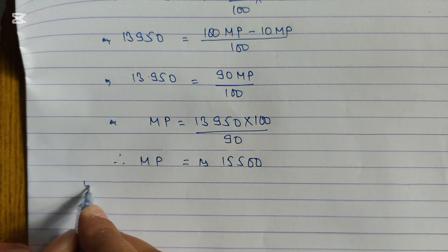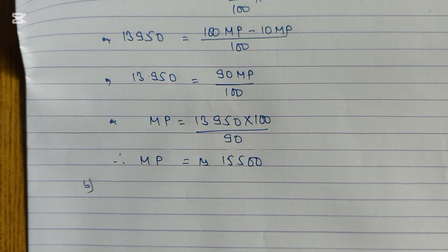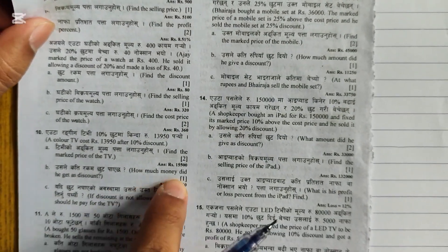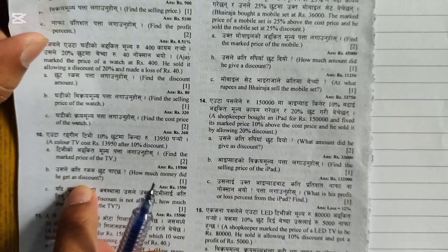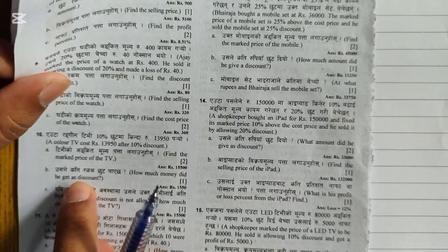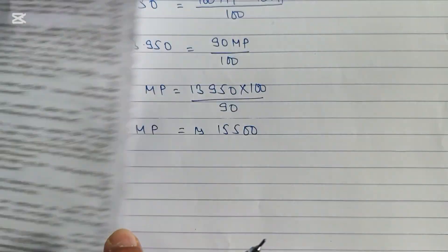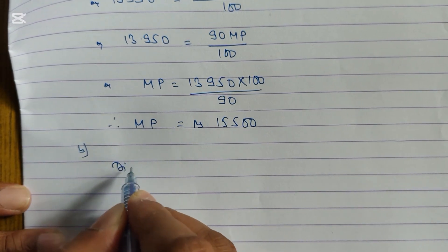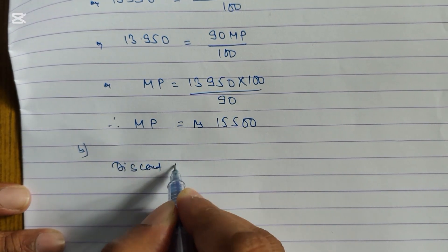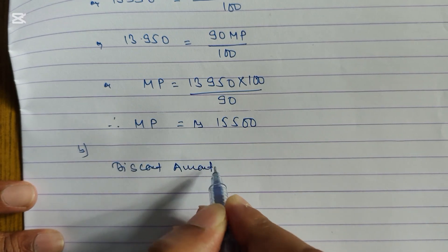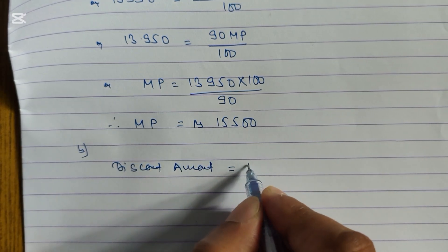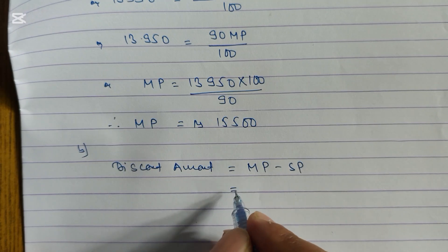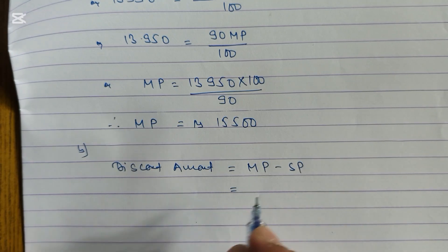Now question number B: How much money did he get as a discount? To find the discount amount, we use the formula: Discount amount = MP minus SP.